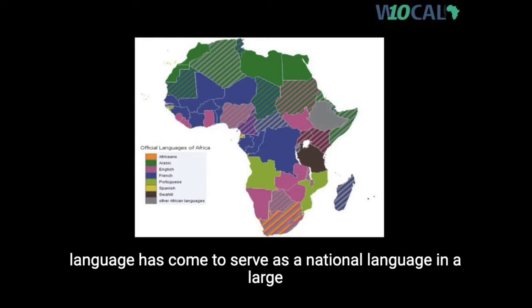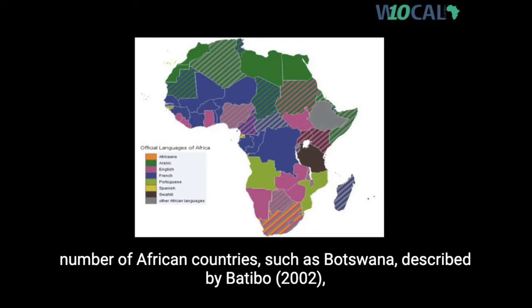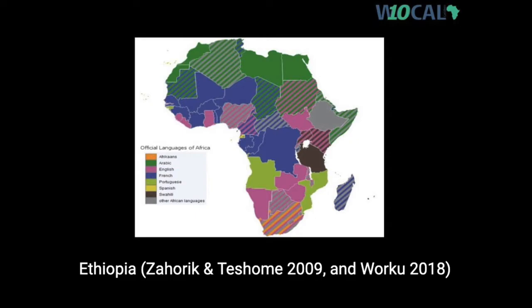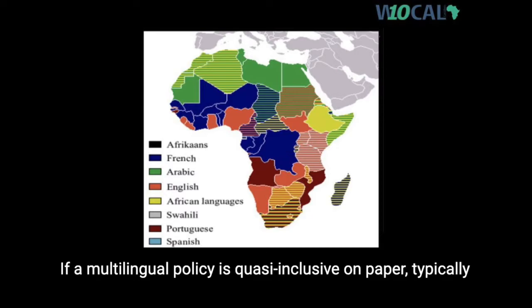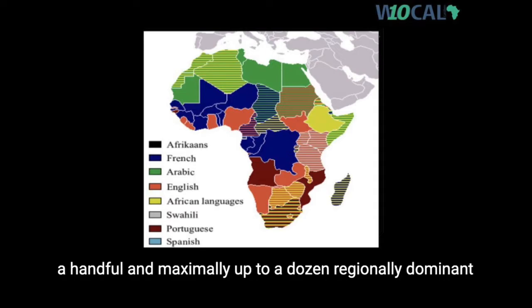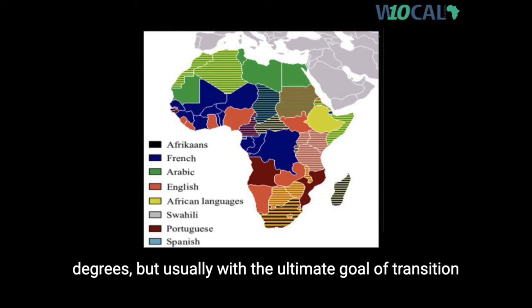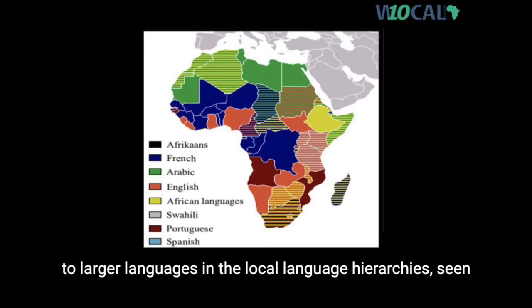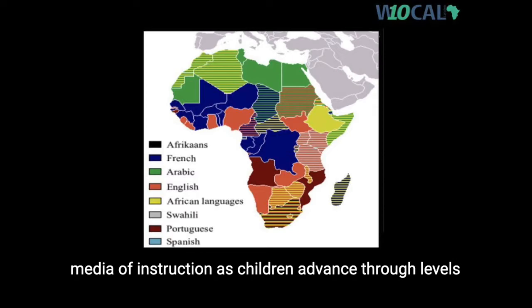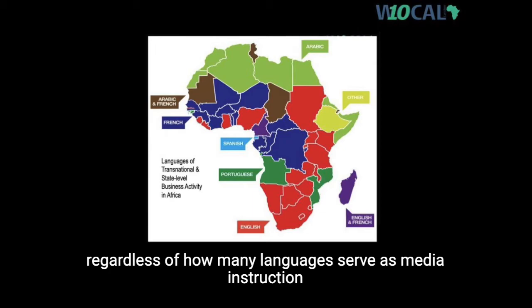Typically, one ethnic or social capital majority language has come to serve as a national language in a large number of African countries, such as Botswana (Batibo 2002), Ethiopia (Zahorek and Tashome 2009, or Warku 2018), and Senegal (McLaughlin 2008). If a multilingual policy is quasi-inclusive on paper, typically a handful and maximally up to a dozen regionally dominant languages of wider communication are accommodated, but usually with the ultimate goal of transition to larger languages, seen in the narrowing of choices for the media of instruction as children advance through schooling, where former colonial languages typically dominate higher levels and STEM disciplines.